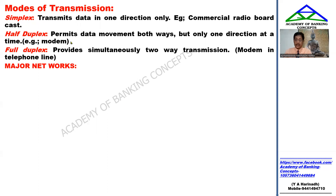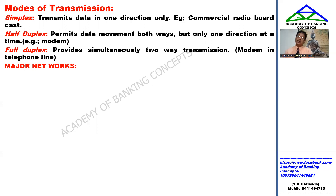Modes of transmission: simplex, half duplex, and full duplex are the different modes. Simplex — for example, commercial radio broadcast — transmits data in only one direction. It is a one-way transmission.